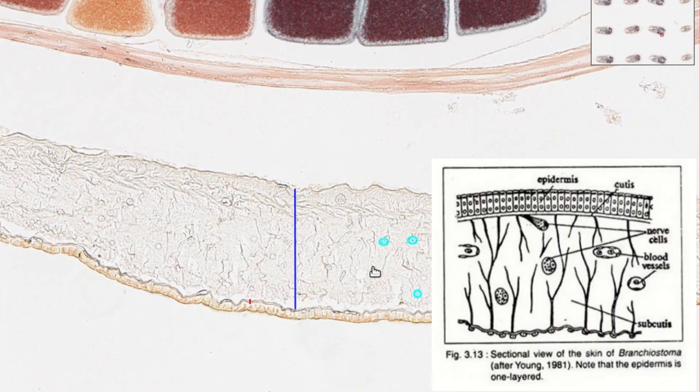The function of the subcutis is going to be to carry blood vessels and nerve fibers. The nerve fibers will likely be sensory, so they'll be detecting things like touch or maybe light or chemicals, what have you.